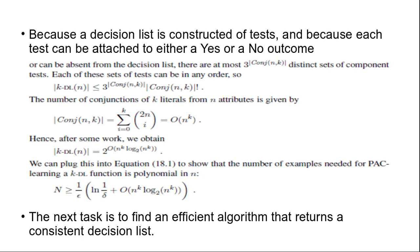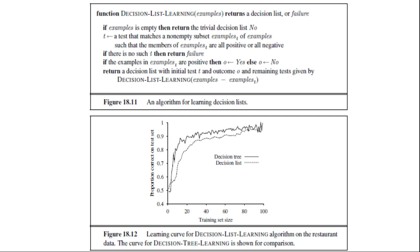The next task is to find an efficient algorithm that returns a consistent decision list. We will use a greedy algorithm that immediately finds a test that agrees exactly with some subset of the training data. Once it finds such a test, it adds it to the decision list under construction and removes the corresponding examples. This is repeated until there are no such examples left.